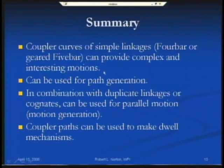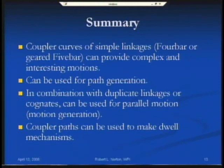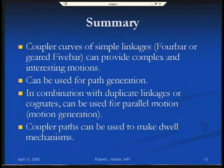In summary, coupler curves of simple linkages — four-bar and geared five-bar — can provide very complex and interesting motions useful for path generation. In path generation we're moving a point along a desired path, though orientation of the link could be a serious issue. That can be dealt with by introducing duplicate linkages or cognates, giving what's called parallel motion — where a line in the plane follows the coupler curve path, with every point on that line following the same path.